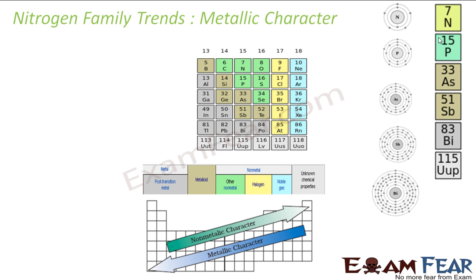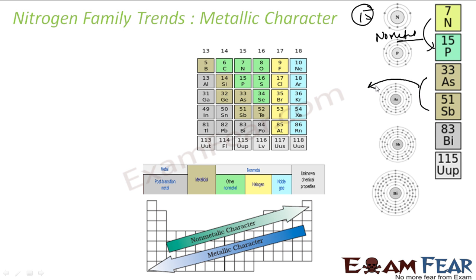Regarding metallic character, the trend is almost the same. Non-metallic character increases going up the group. In Group 15, nitrogen and phosphorus are non-metals, arsenic and antimony are metalloids, and bismuth is a metal.